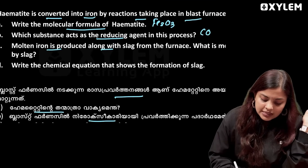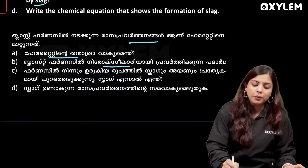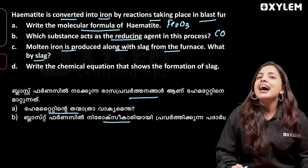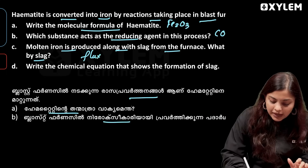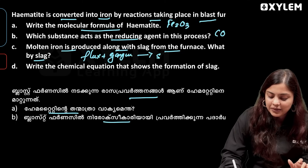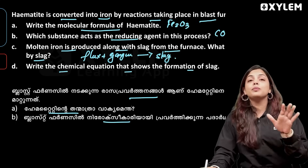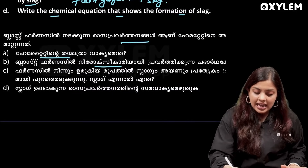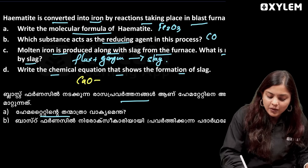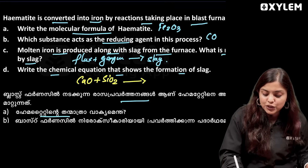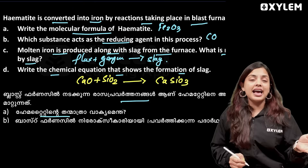Molten iron is produced along with slag from the furnace. Slag is formed when the flux and gangue react together. The flux is calcium oxide, the gangue contains silica (SiO2), and their reaction produces calcium silicate — this is the slag formation equation.